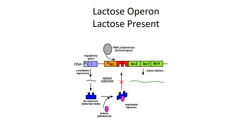The setup is the same: we have the regulatory gene I being transcribed and translated all the time, producing a repressor protein, and we have the three structural genes lacZ, lacY, and lacA that, when transcribed and translated, produce the enzymes we need to break apart the sugar lactose.